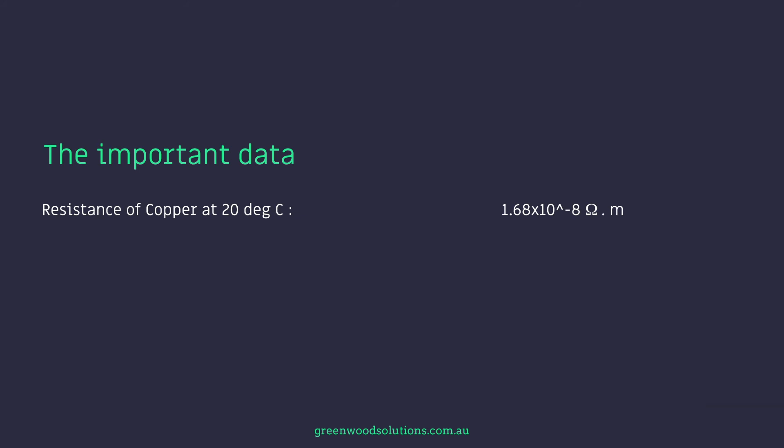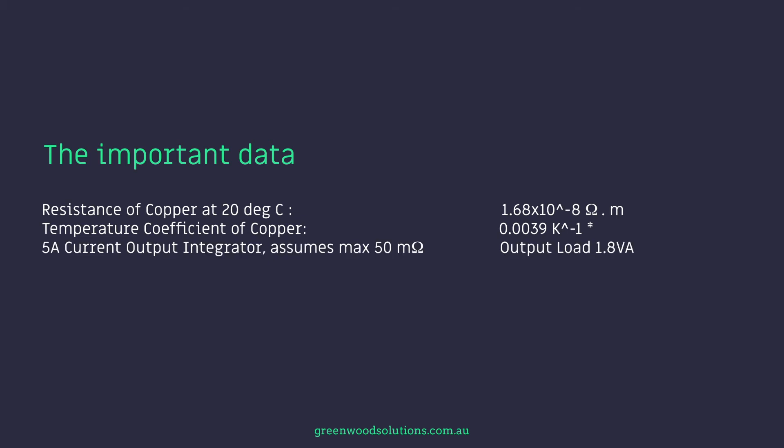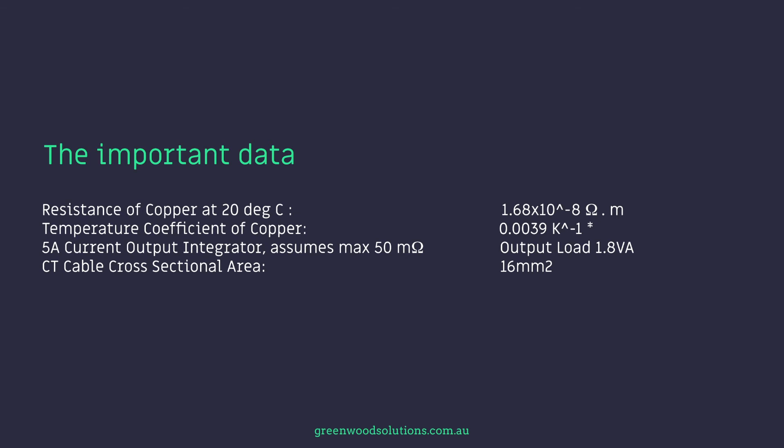We have to look at the resistance of copper at 20 degrees C and the temperature coefficient of copper. The 5 amp current output integrator — we assume a maximum of 50 milli-ohms. The CT cable cross-sectional area, which in this case is 16 mm squared, and the CT cable length — the IntelliPro to the COI — with a 15 metre maximum for this calculation. Also the CT input burden of the COM app IntelliPro, which is 0.5 VA from the data sheet.